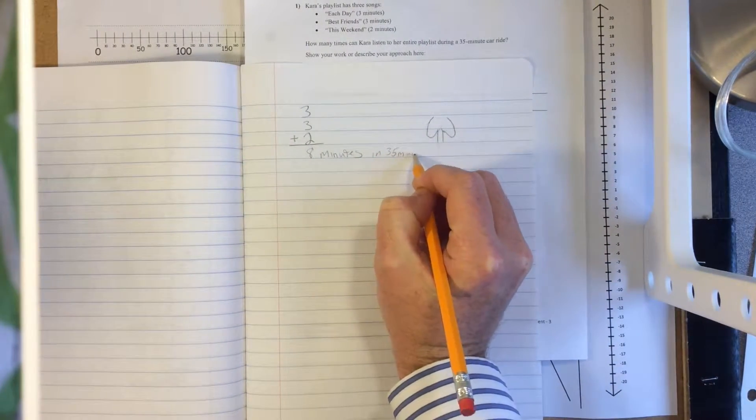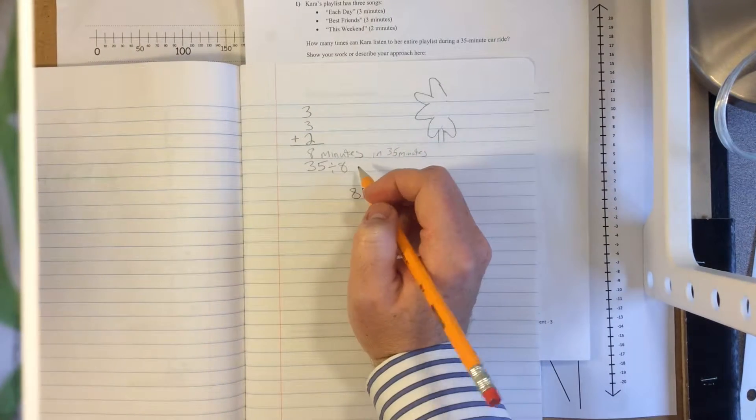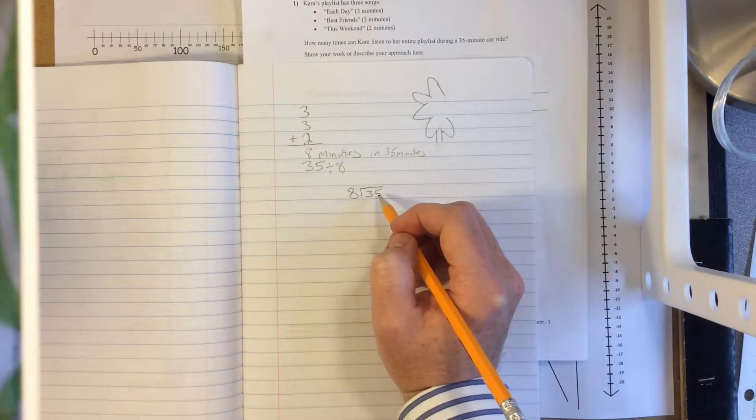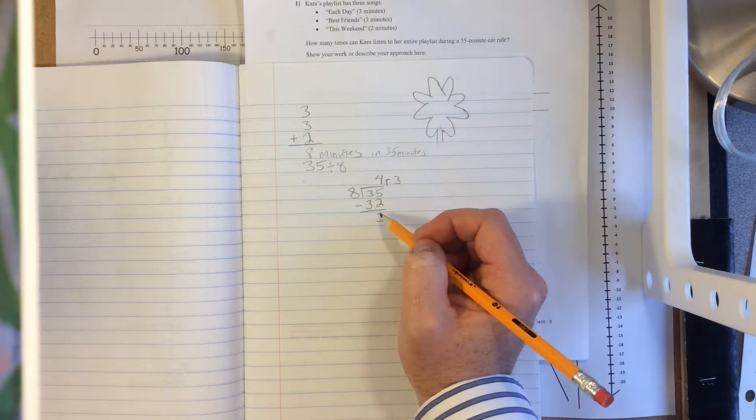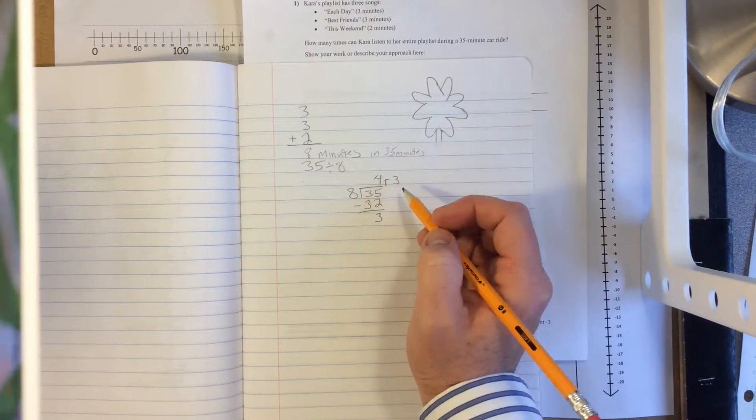And that needs to be in 35 minutes. So how many times does 8 minutes fit in 35 minutes? That's 35 divided by 8. 35 divided by 8 is 4, with a remainder of 3.